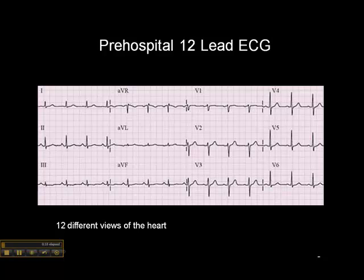A single lead is like taking a single photograph of a car. So let's say you were trying to sell your car — one lead, like lead 2 for example, would be like having a single photograph of your car. A 12-lead ECG is like having 12 photographs of your car from 12 slightly different angles. So we're looking at the heart from 12 different perspectives, and that enables us to see specific coronary vessels and whether there's a problem with those vessels when looking at ischemia or infarction, which is the focus of this presentation.